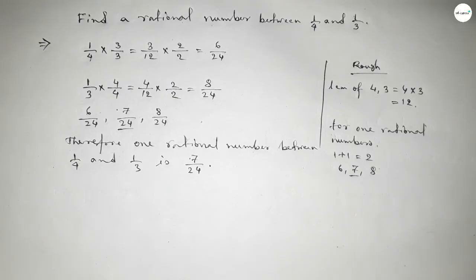This is the process to find out a rational number between 1 over 4 and 1 over 3. Thanks for watching.